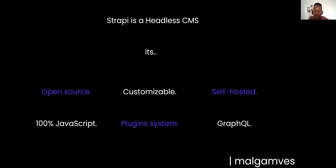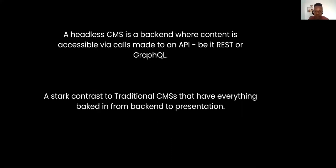It's got a really cool plugin system so you can build additional functionality into it. The GraphQL plugin — which gave me so much trouble — is a plugin built by a community member. It's got GraphQL and REST; REST is default, like you saw the REST API was working very well. GraphQL is supported, like you saw in my backup.